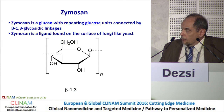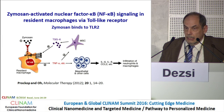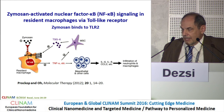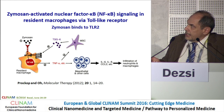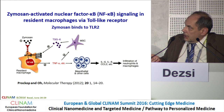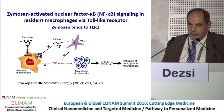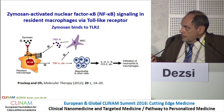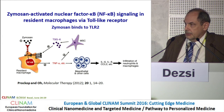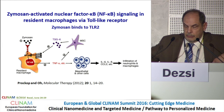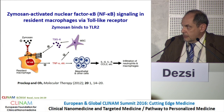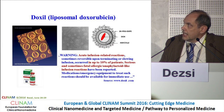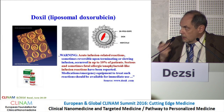Zymosan is a glucan found in the wall of fungi like yeast. Zymosan activates the complement system at multiple points, but it also activates NF-κB-based signaling in resident macrophages via toll-like receptors, and via TNF-alpha and the release of interleukins it can cause inflammation-like reactions. So it is really a complex case.